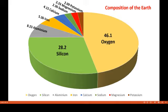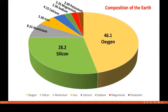The eight elements are: Oxygen, Silicon, Aluminium, Iron, Calcium, Sodium, Magnesium, and Potassium. Oxygen accounts for 46.1% of the Earth, Silicon makes about 28.2%, Aluminium 8.23%, Iron about 5.36%, Calcium about 4.15%, Sodium 2.36%, Magnesium 2.33%, and Potassium 2.09%. This entire composition makes about 99.0% of the total Earth.